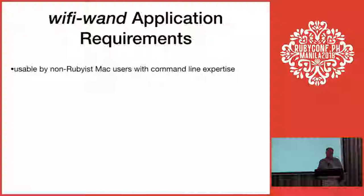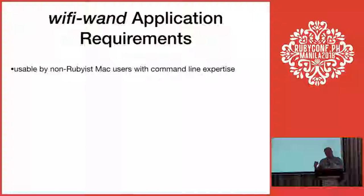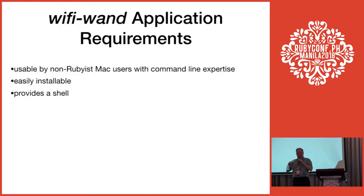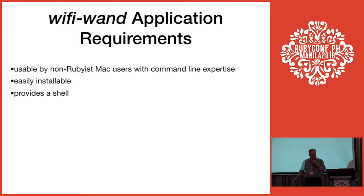I realized most Mac users, even command line Mac users, are not Rubyists, so I wanted to minimize their barrier to using it and make it easily installable. It's a gem, so it is easily installable. I also wanted it to provide a shell — as I used it more, I realized it was cumbersome to issue a new command for every little piece of information. So I decided to create a shell using Pry, which was pretty easy.